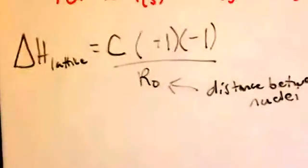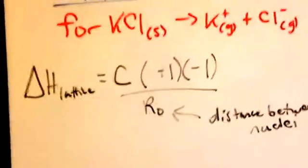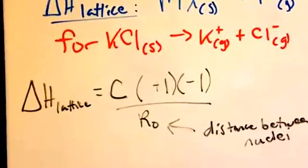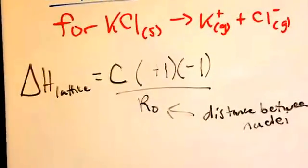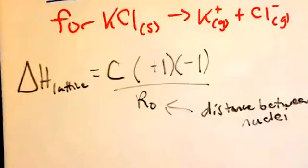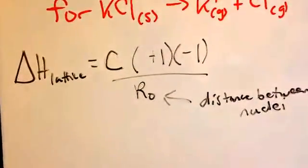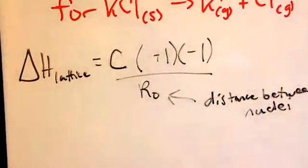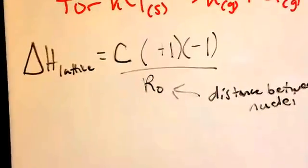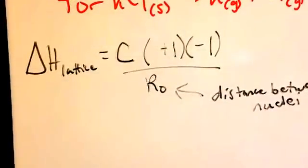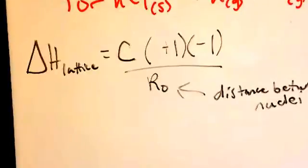So keep this in mind if one's comparing. If your distances are relatively the same between ions and your charge increases, the lattice energy, the energy required to break them apart, increases, meaning that you have a more stable or higher, more stable ionic compound, ionic bonding.